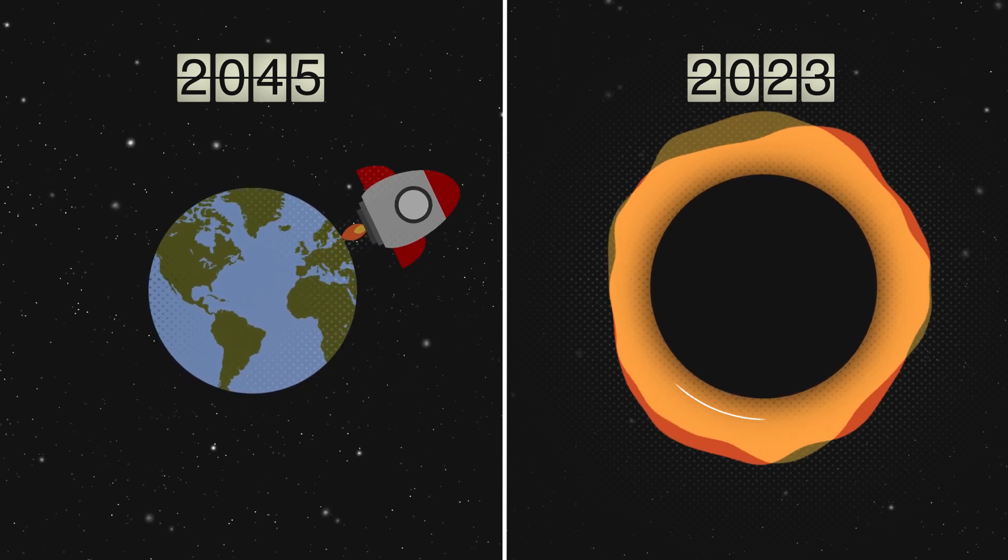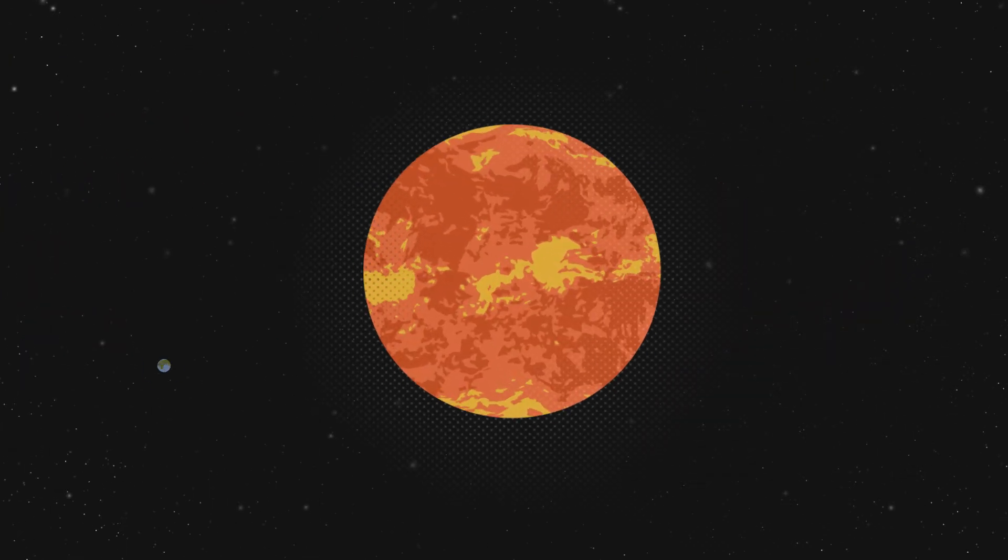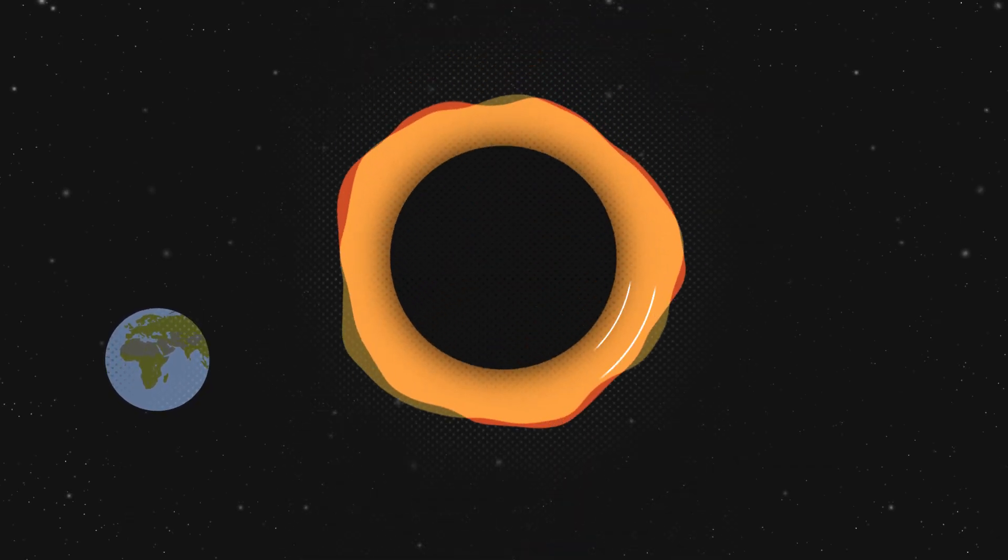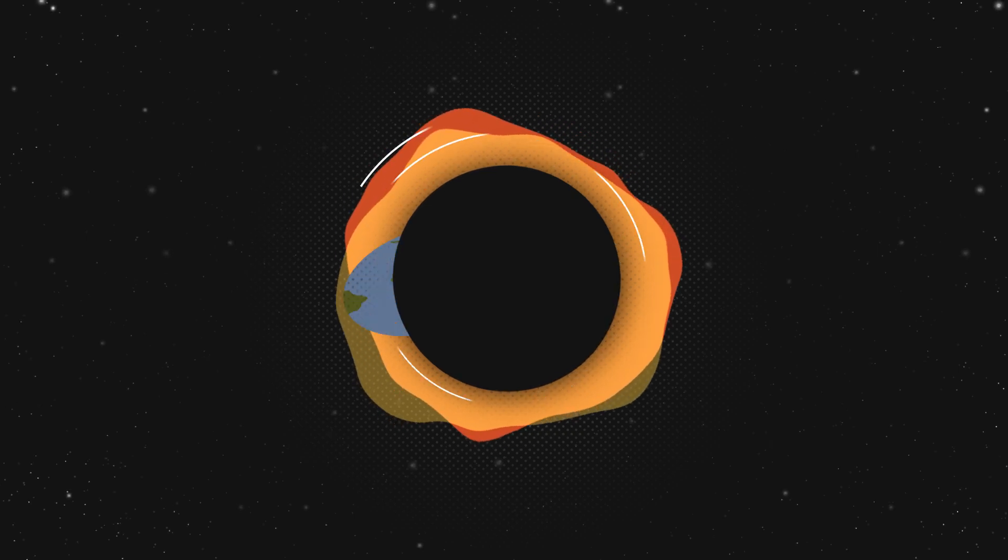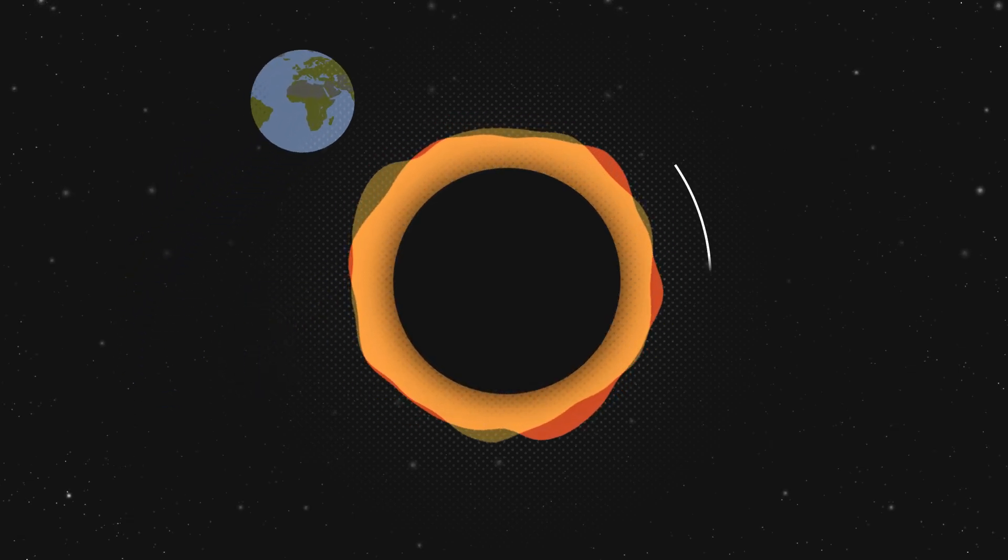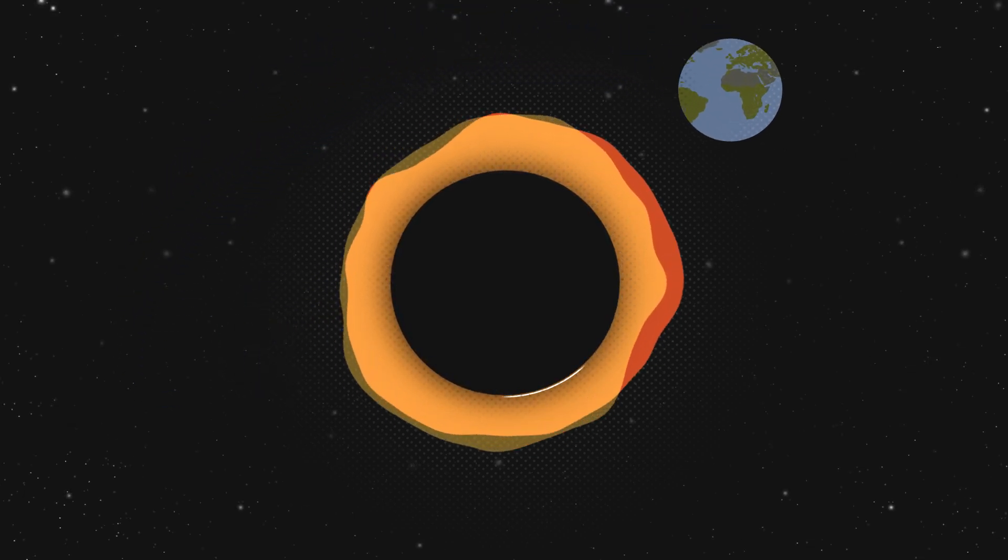Say the Sun is swapped out with a black hole of the same mass. Does Earth get sucked inside? The Earth would keep orbiting just as it is orbiting exactly now. Nothing would happen except it would be very cold because there wouldn't be any more starlight.